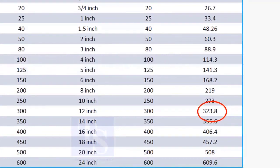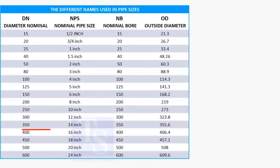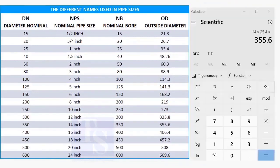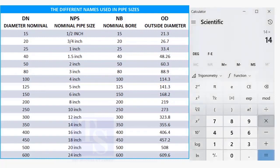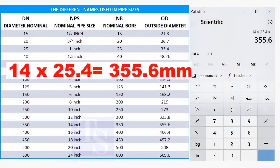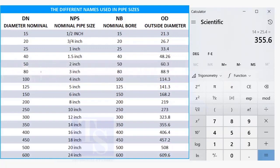The answer is 304.8 millimeters, but the actual size is 323.8 millimeters. Now check the OD of a 14 inch pipe: 14 multiplied by 25.4 is 355.6 millimeters.